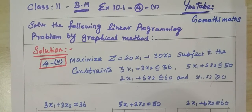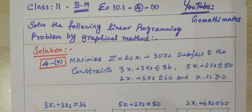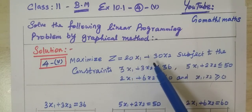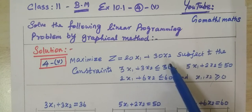Hello students, good morning. This is for Class 11 Business Math, Exercise 10.1, Question number 4, subdivision 5. Solve the following linear programming problem by graphical method. First one: maximize Z equal to 20x1 plus 30x2.